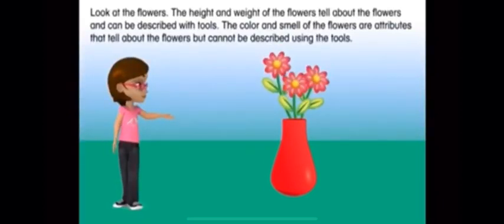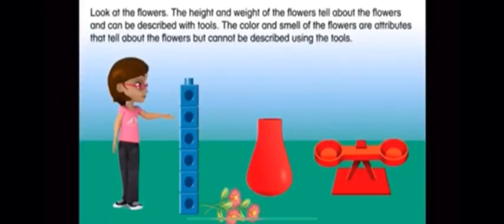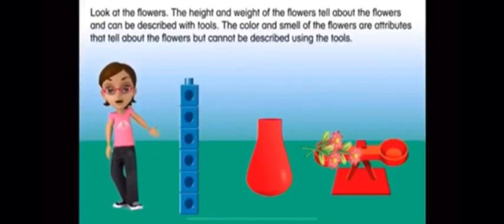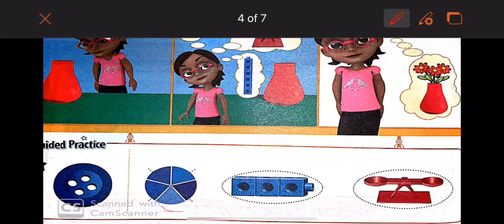The height and weight of the flowers tell about the flowers and can be described with tools. The color and smell of the flowers are attributes that tell about the flowers but cannot be described using the tools. Tools can help us find out some things about an object, but not everything. The measuring cup helps us measure capacity, the balance helps us measure weight, and the cubes help us measure length. But the wheel of colors does not help us measure — it is not a measuring tool.